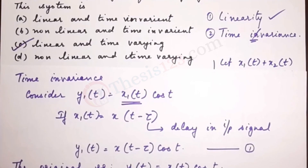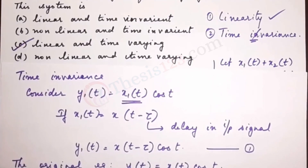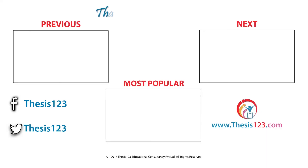So here is the final answer: the system is linear and time varying, which is option C. I hope it has helped. Thank you.